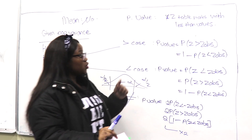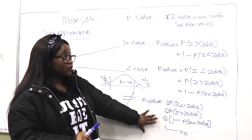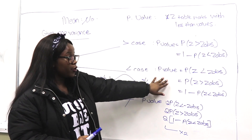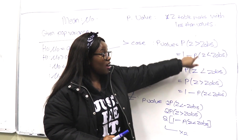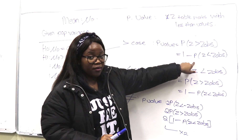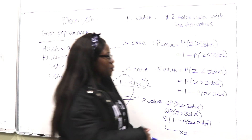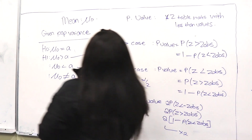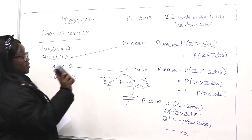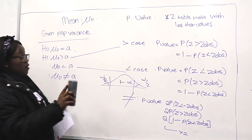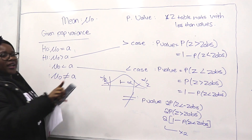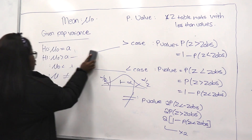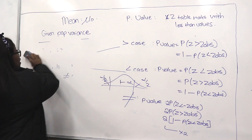It's very important that you don't get confused with your signs and how you change them. Because the z distribution also correlates with proportion, I'm going to go through that now.